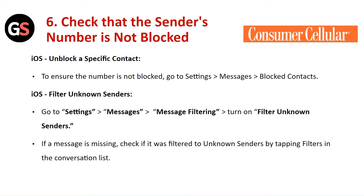Check that the sender's number is not blocked. For iOS, to unblock a specific contact and ensure that the number is not blocked, go to settings, then click on messages and then blocked contacts. For iOS filter unknown senders, go to settings, then messages, then message filtering. Turn on the filter unknown senders option. If a message is missing, check if it is filtered to unknown senders by tapping on the filters in the conversation list.